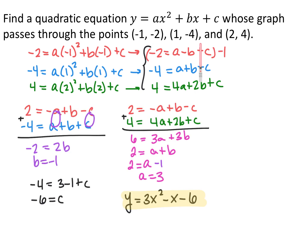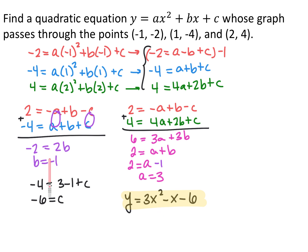I chose to eliminate c by multiplying the first equation by negative 1 and adding it to the second equation, which eliminated both a and c, giving negative 2 equals 2b, so b equals negative 1. I also multiplied the first equation by negative 1 and added it to the third equation, getting 6 equals 3a plus 3b, which simplifies to 2 equals a plus b. Plugging in b equals negative 1, I get a equals 3. Taking a equals 3 and b equals negative 1 and plugging into the second equation gives c equals negative 6. So the quadratic equation is y equals 3x squared minus x minus 6.